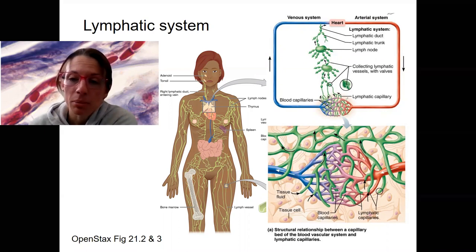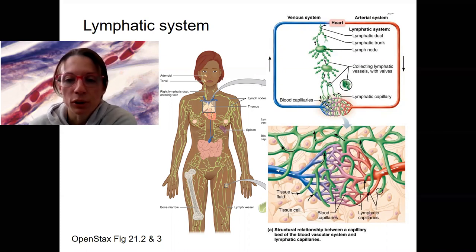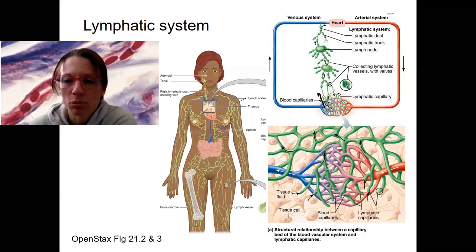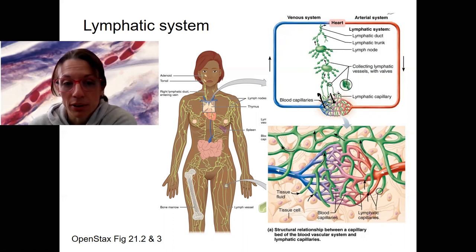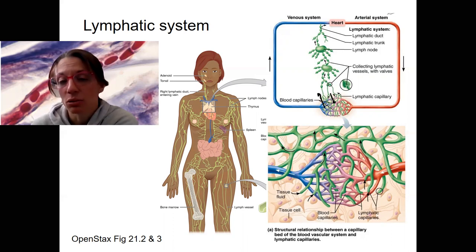The lymphatic system came up in the last video because we talked about how at the capillaries, all throughout circulation, filtration occurs at slightly higher rates and quantity than reabsorption. So basically, as part of that microcirculation of the capillaries, we have excess fluid leaving the blood circulation. The lymphatic capillaries pick this fluid up and prevent swelling in those tissues.